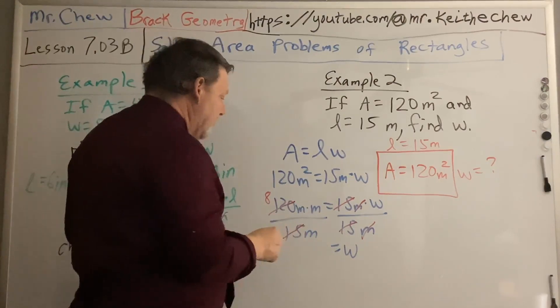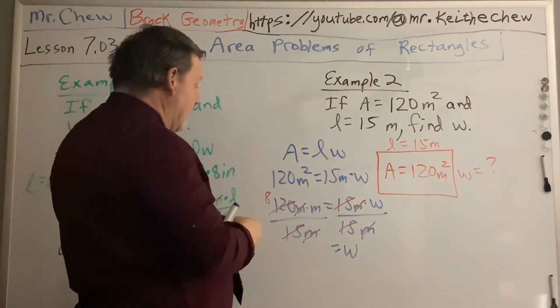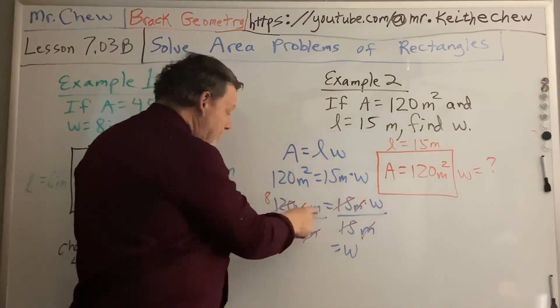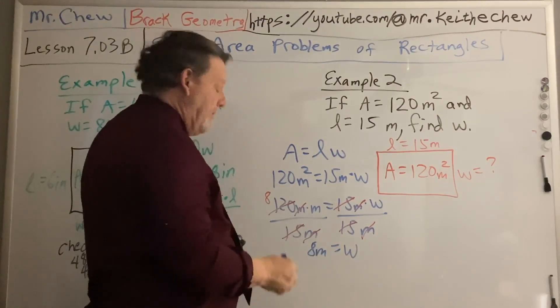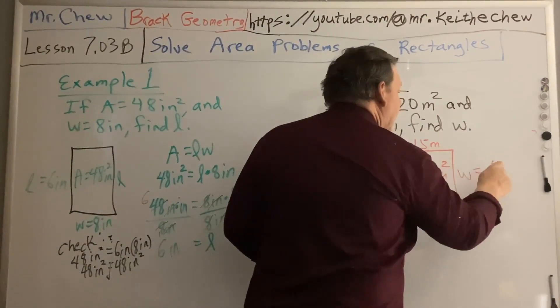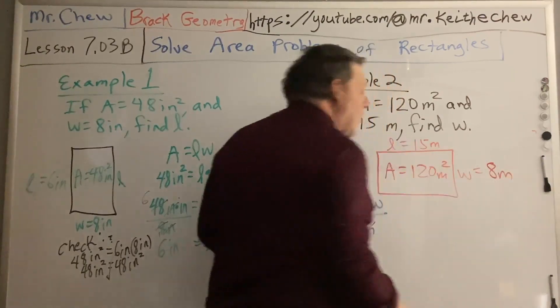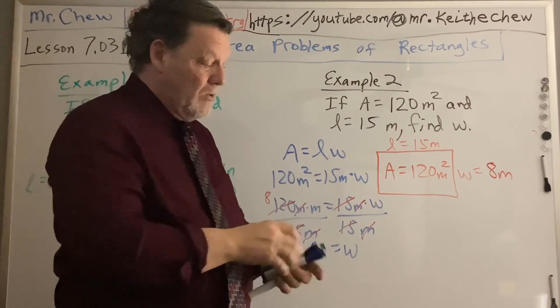You can always use a calculator to do this. The meters over meters, that's a common factor that cancels out. And I have 8 meters equals the width. So we're saying we believe that this is 8 meters. Well, I always want people to check their answers. So how do you check it?